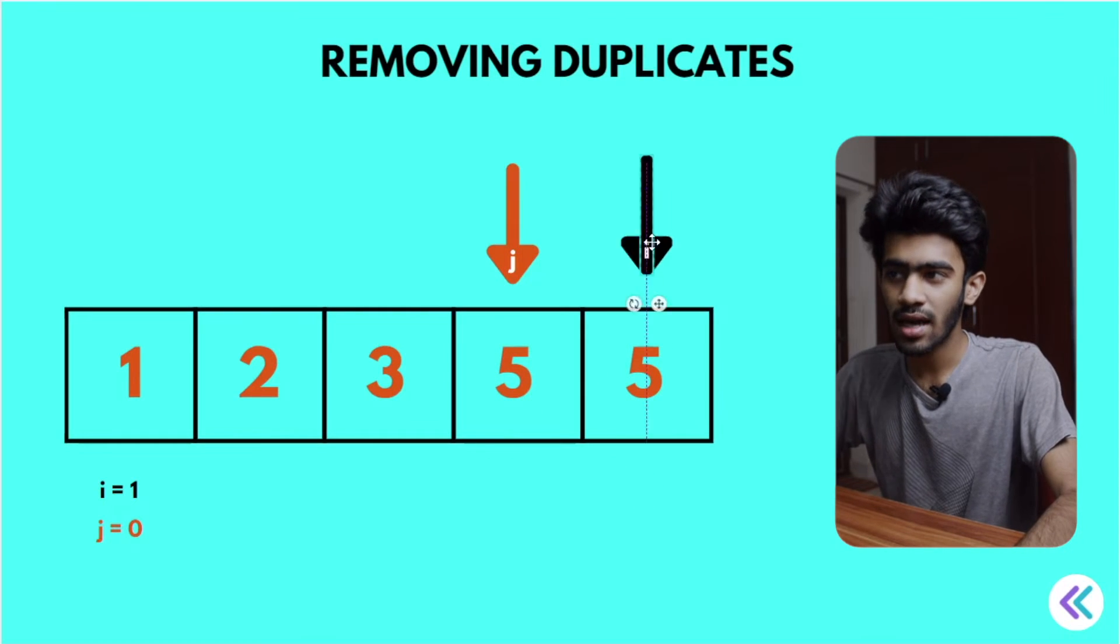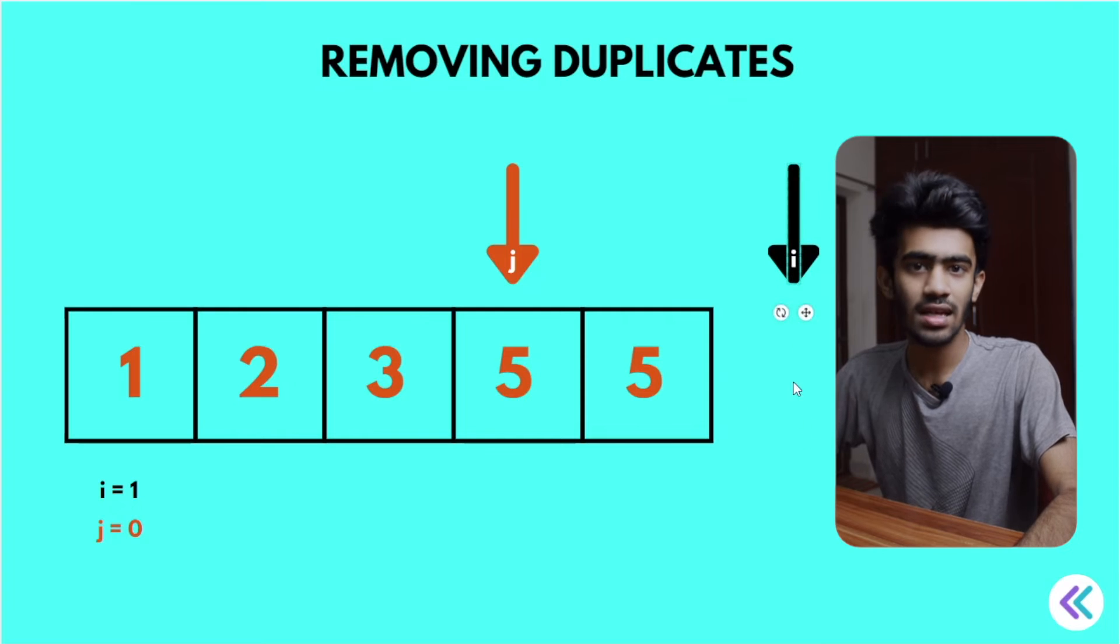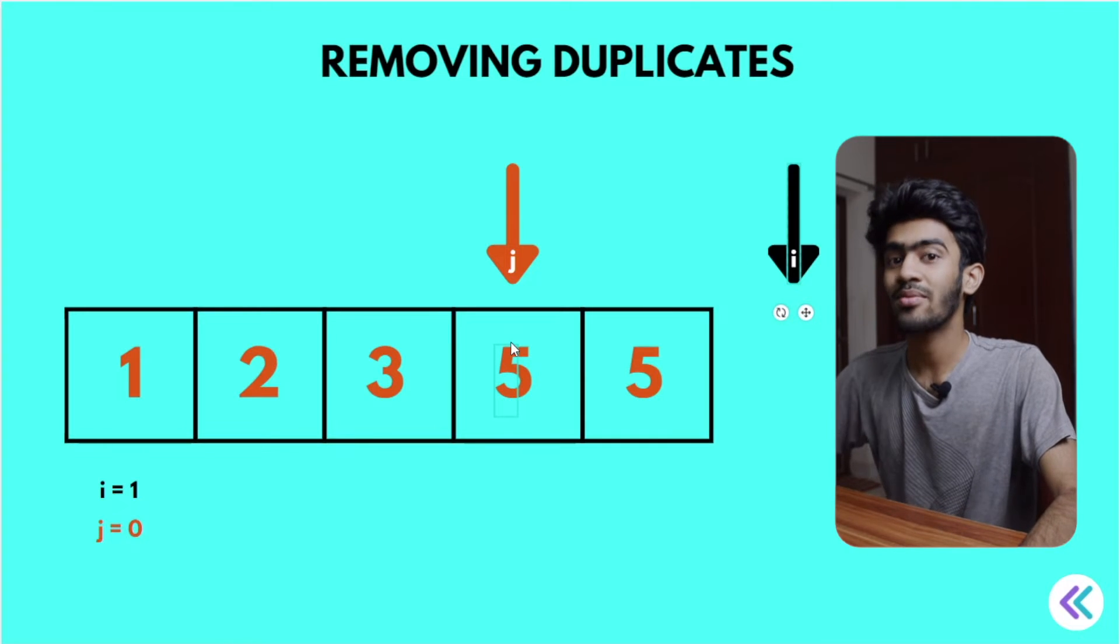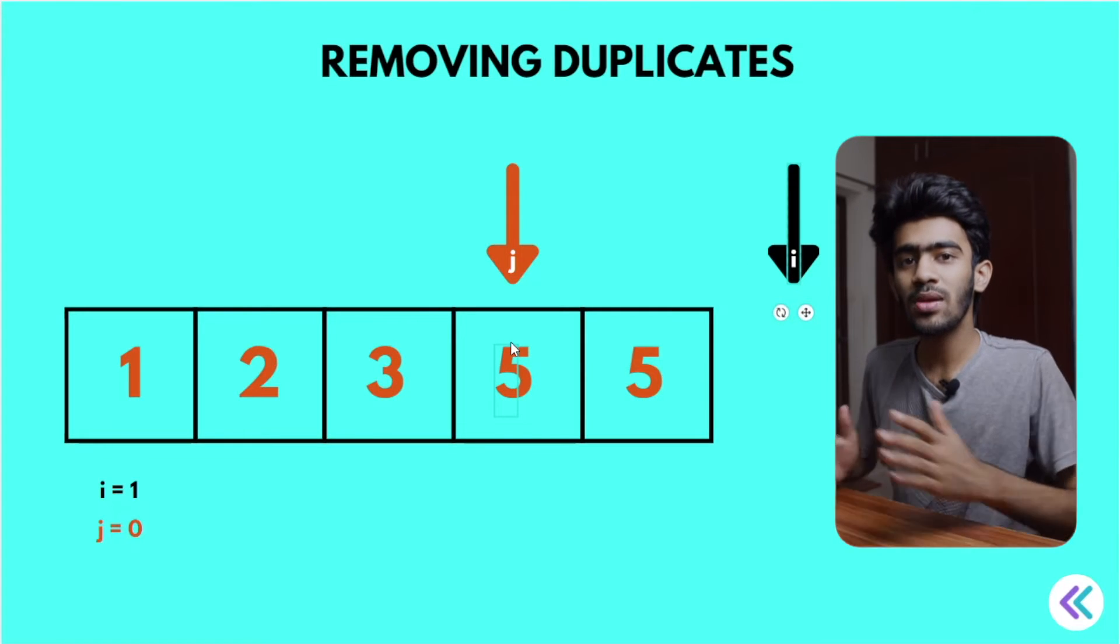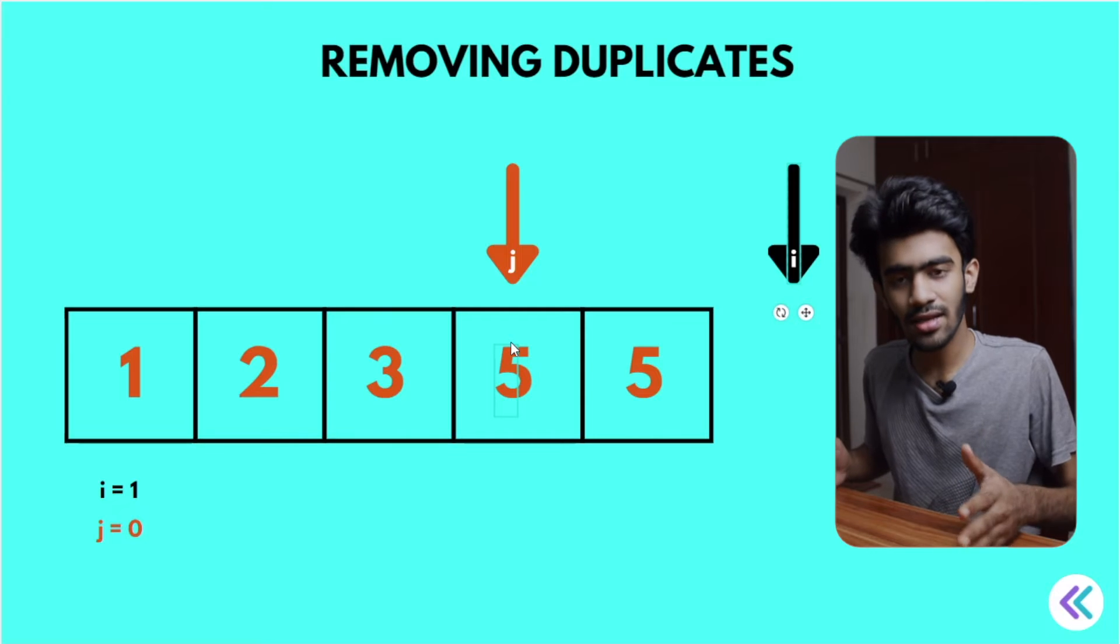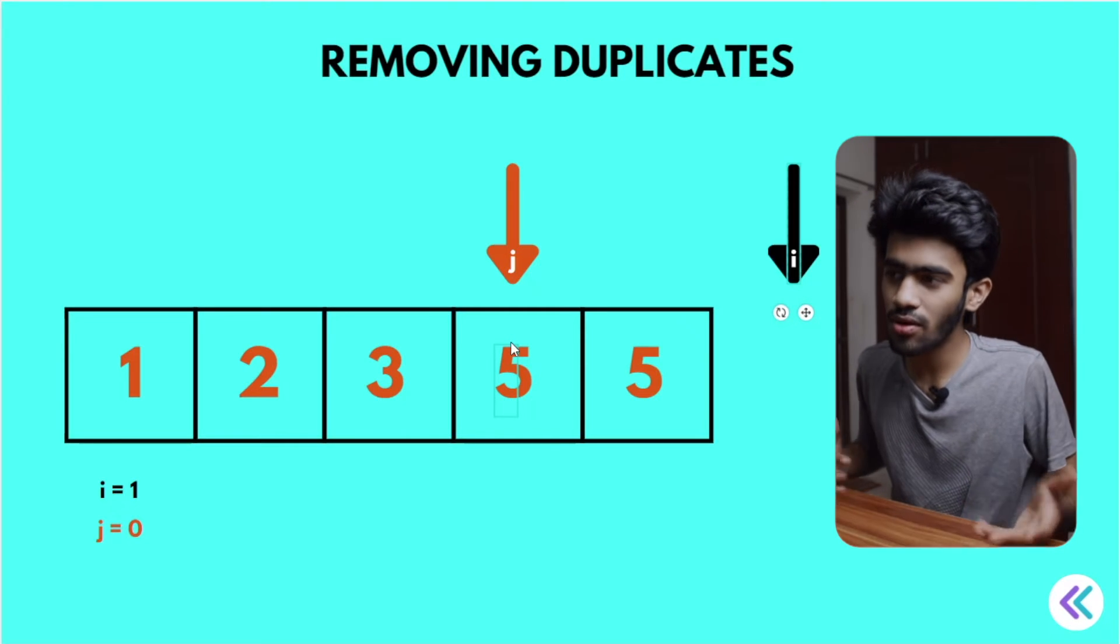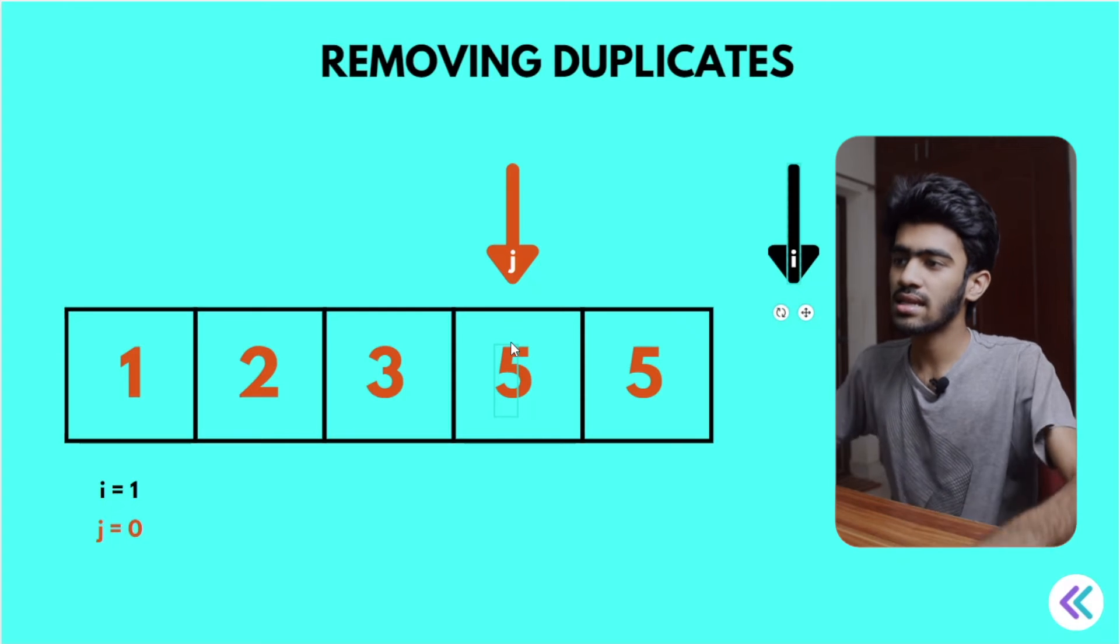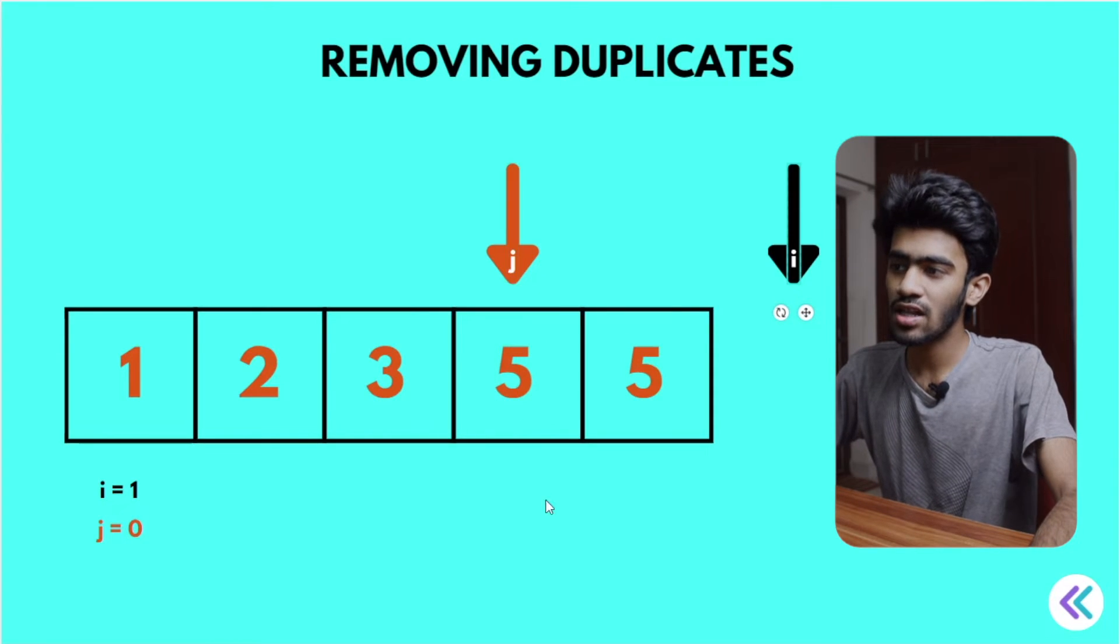Now i value increment. So now j value...